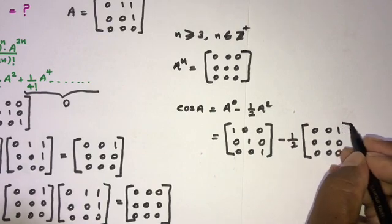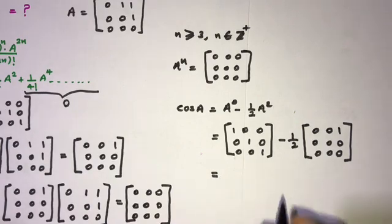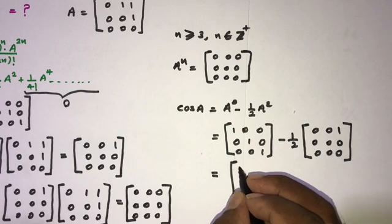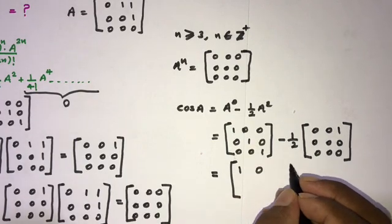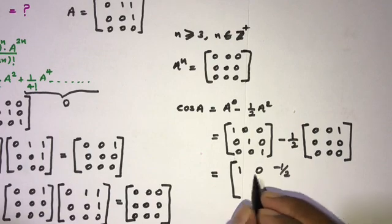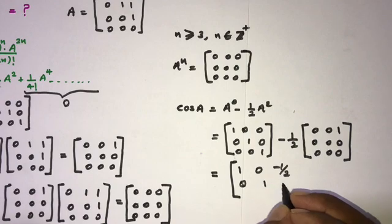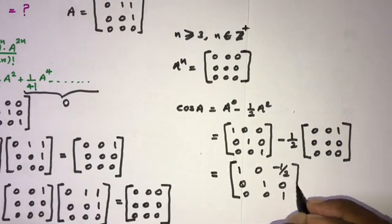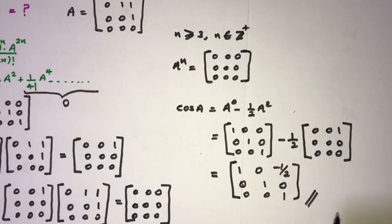Simplifying, we get the final answer: cos(A) = [1, 0, -1/2; 0, 1, 0; 0, 0, 1]. If you like this video, please subscribe to the channel. Thank you for watching.